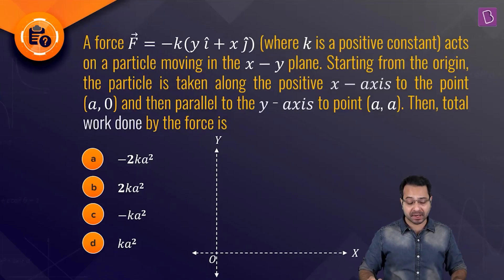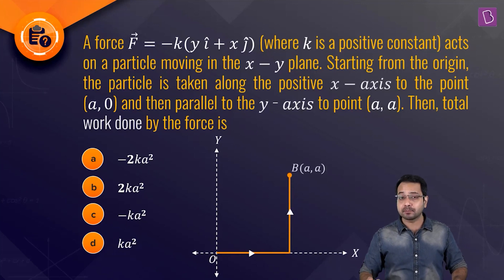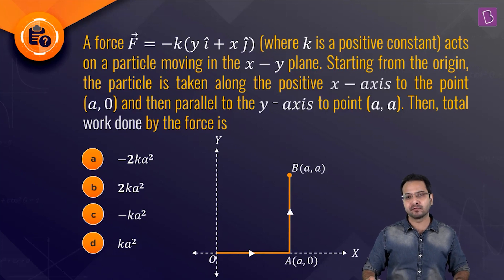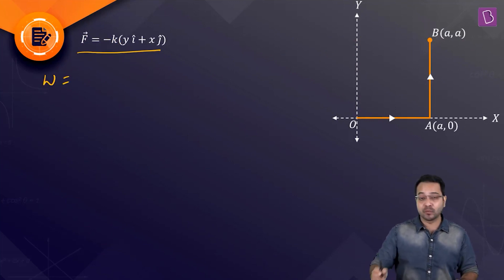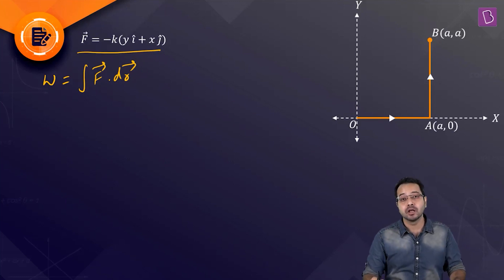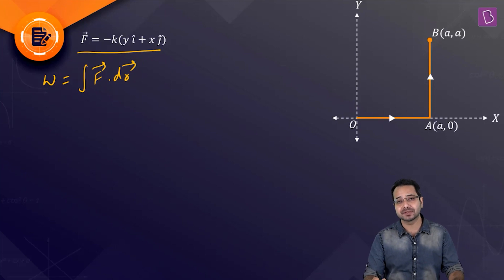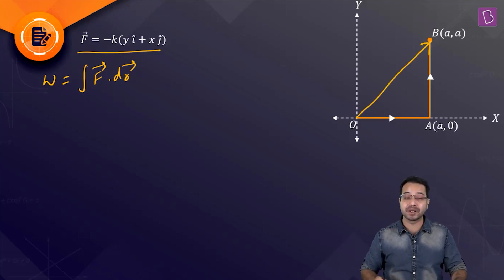Next question: a force F = −k(yi + xj), where k is a positive constant, acts on a particle in the xy-plane. Starting from the origin, the particle moves along the positive x-axis to point (a, 0), then parallel to the y-axis to point (a, a). Find the total work done. Since the force is variable, we must use W = ∫F·dr. Also, the work is path-dependent, so we cannot go directly from O to B.